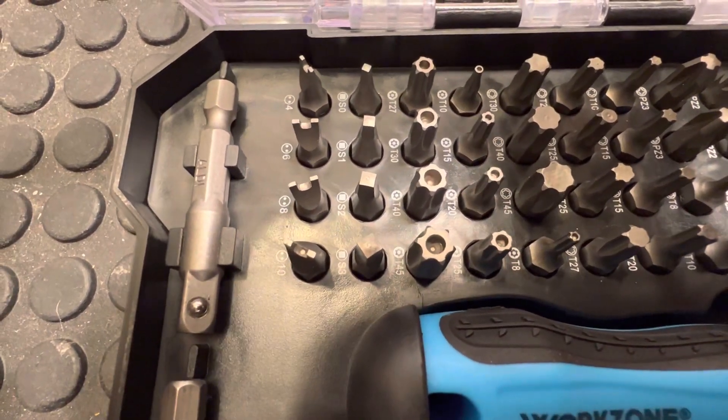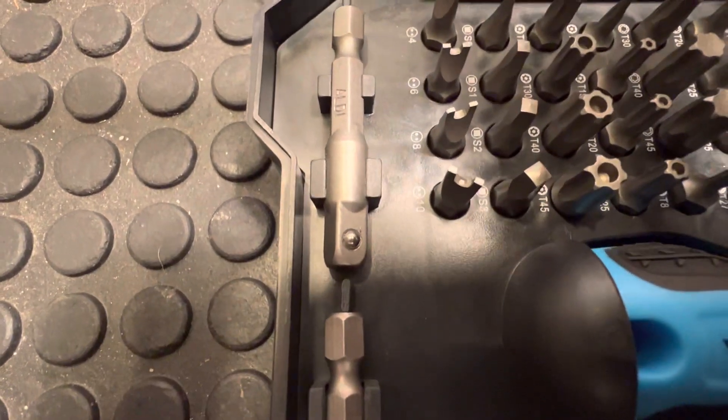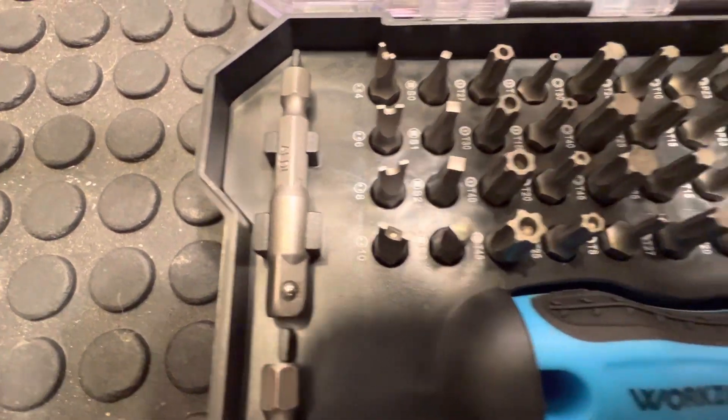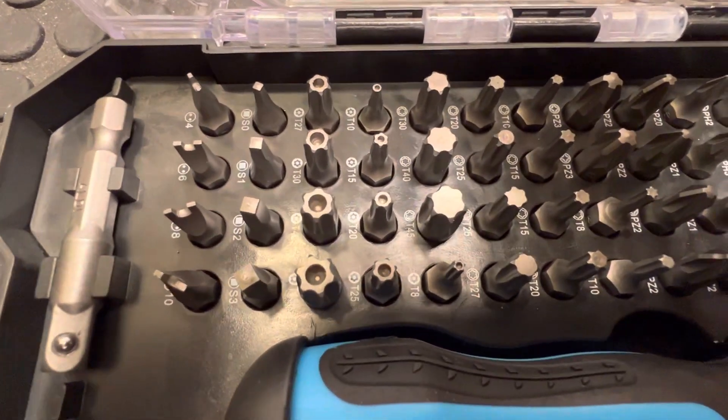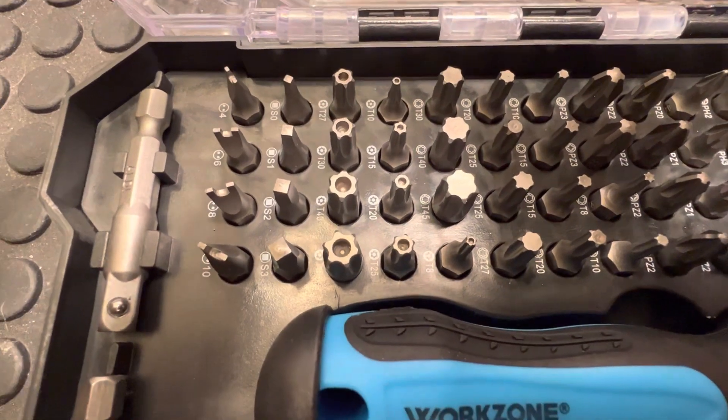You've got your wee extension there that you can put on the end. That's it in the middle of the screen. You can put your sockets on that if you want, if you've got sockets. But I'll go down close and you can see what's there.